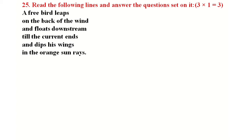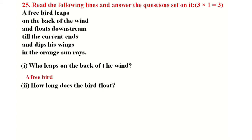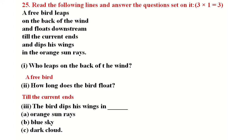The poem lines given are: 'Every bird leaps on the back of the wind and floats downstream till the current ends and dips his wings in the orange sunrise.' First question — Who leaps on the back of the wind? Answer: The bird. How long does the bird float? Answer: The bird floats till the current ends. What does the bird dip his wings in? Answer: The bird dips his wings in the orange sun rays. These three questions are for 3 marks.